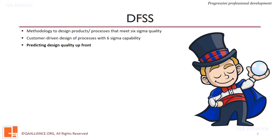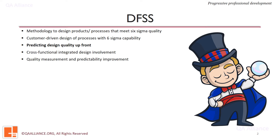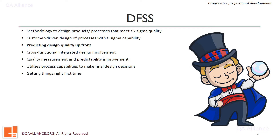We have a cross-functional integrated design involvement, which helps in early quality measurement and predictability improvement. In DFSS, process capabilities are utilized to make final design decisions. All this means that Six Sigma is implemented proactively, so that we get Six Sigma quality in the product even before it is in the market. It's like getting it right first time.